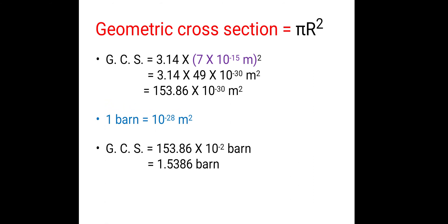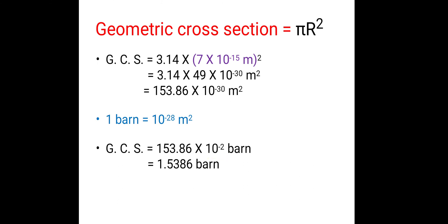Now we should know that 1 barn = 10⁻²⁸ m², or equivalently 10⁻²⁴ cm². We can convert: geometric cross-section = 153.86 × 10⁻³⁰ m² = 153.86 × 10⁻² barn, because 10⁻³⁰ divided by 10⁻²⁸ gives 10⁻². Moving the decimal point two places to the left, we get 1.5386 barn. So the geometric cross-section is 1.5386 barn.